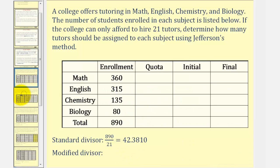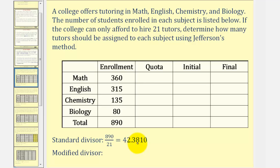Let's look at an example. A college offers tutoring in math, English, chemistry, and biology. The number of students enrolled in each subject is listed below. If the college can only afford to hire 21 tutors, determine how many tutors should be assigned to each subject using Jefferson's method. The first step is to find the total enrollment, which is 890. Since we have 21 tutors to allocate, the standard divisor is 890 divided by 21, which is approximately 42.3810.